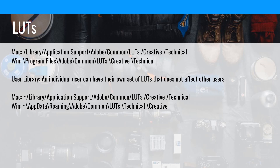For LUTs — I have a whole tutorial about this — I'm covering two locations where you can drop in creative and technical LUTs and use them in the Lumetri Color panel. By default, on Mac, it's in the Library folder — you have to hold the Option key when clicking the Go menu to get in there because Apple hides it. Inside the Library folder, go to Application Support, Adobe, Common, LUTs, then Creative or Technical. On Windows, it's in Program Files, Adobe, Common. There's also a user Library location so an individual can have their own set of LUTs that doesn't affect other users — that's in the user Library, Application Support, Adobe, Common, Creative or Technical.